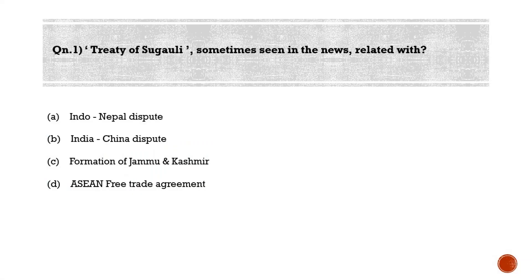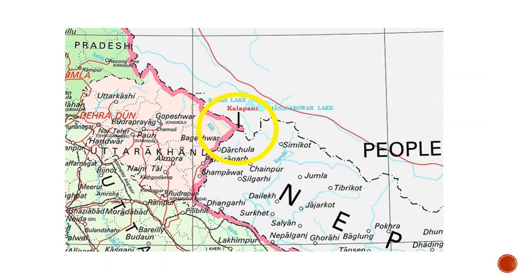First question: The Treaty of Sugauli, sometimes seen in the news, is related with — Option A: Indo-Nepal dispute; Option B: India-China dispute; Option C: Formation of Jammu and Kashmir; Option D: Asian Free Trade Agreement. The correct answer is Option A — it is related with the Indo-Nepal dispute.